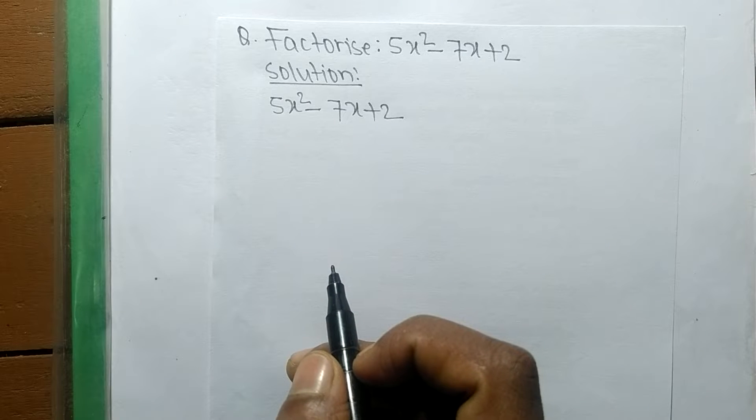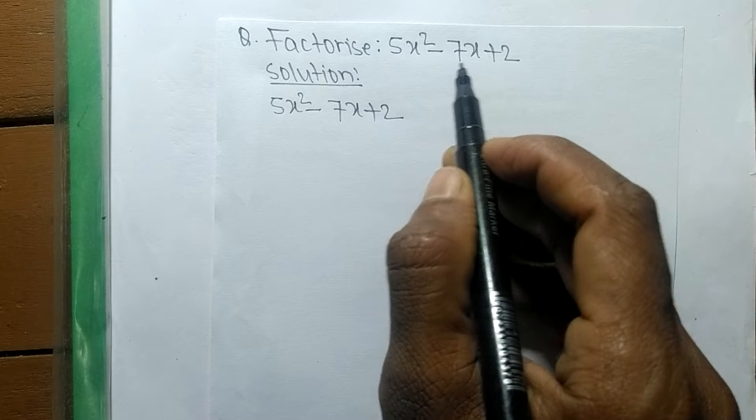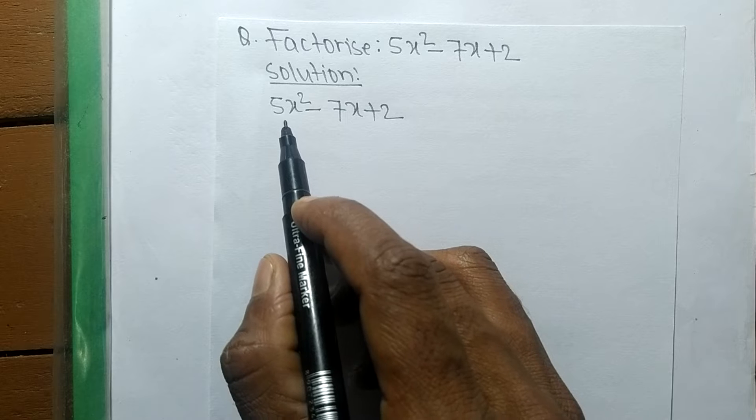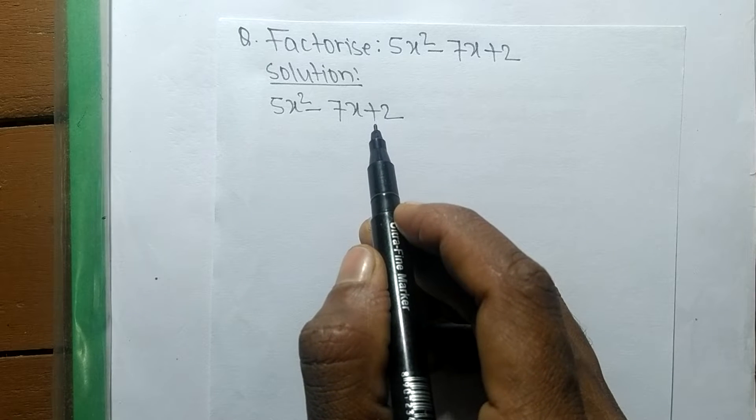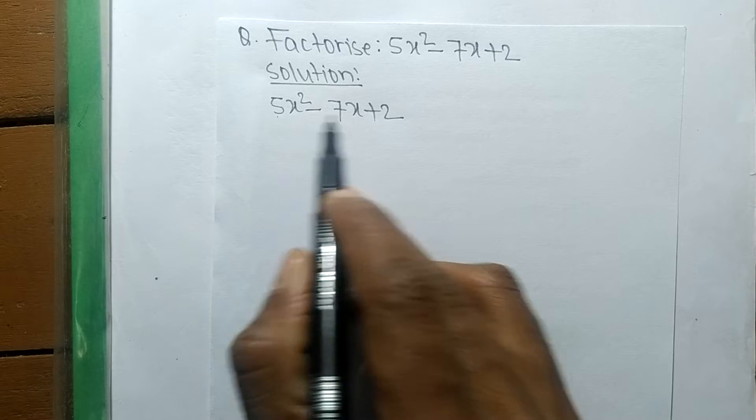So today in this video we shall learn to factorize 5x squared minus 7x plus 2. For the solution of factorizing 5x squared minus 7x plus 2, first we have to find out the factors of the first and last number.